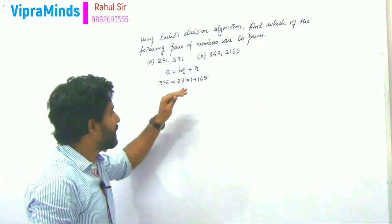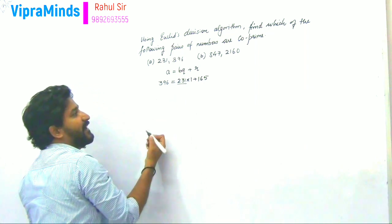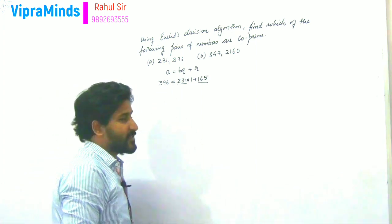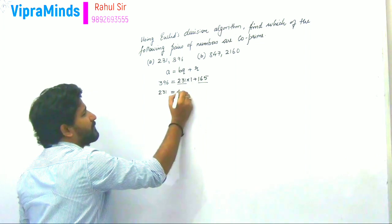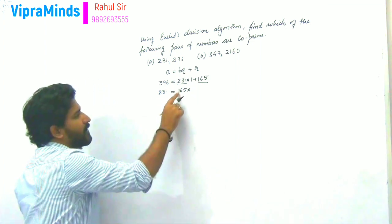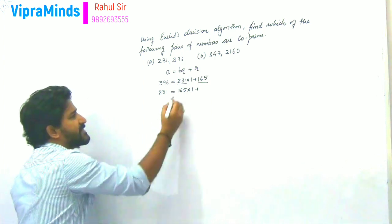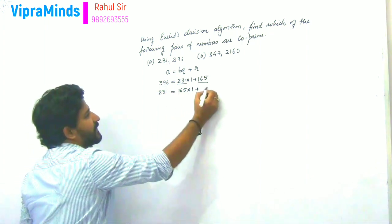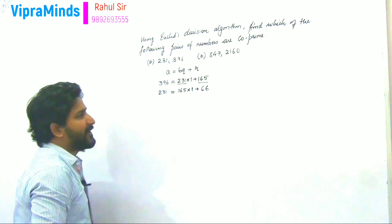Remainder is not 0, so I will continue this process. Now the previous divisor (231) becomes the new dividend and the remainder (165) becomes the new divisor — because 165 is greater than the remainder and smaller than 231. So 231 = 165 × 1 + 66. Then 231 minus 165: 1 minus 5 gives us a borrow, so remainder is 66.